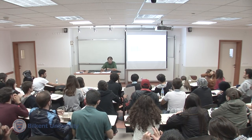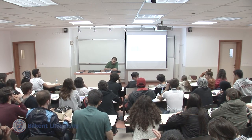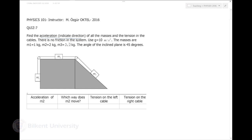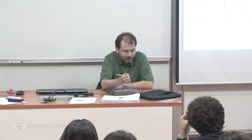We are supposed to find the acceleration of all the masses and tensions in the cables. There is no friction in the system - friction is the thing we are going to learn today. The masses are given and the angle of the inclined plane is 45 degrees, so let me write π/4. To approach any compound mechanical system, I analyze it in terms of whatever point masses are moving. I need to draw free body diagrams.